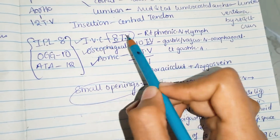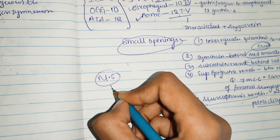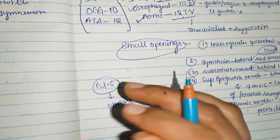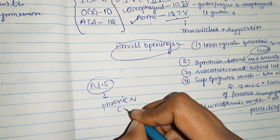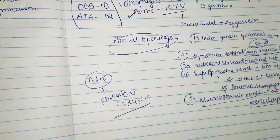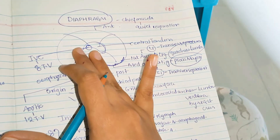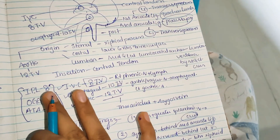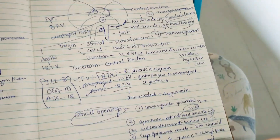The nerve supply of the diaphragm is provided by the phrenic nerve, which is the sole motor nerve of the diaphragm, arising from C3, C4, and C5. In summary, we have covered: the origins and insertion of the diaphragm, the major openings (IVC, esophagus, aorta), and the small openings of the diaphragm.